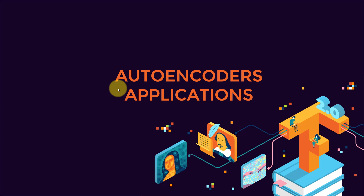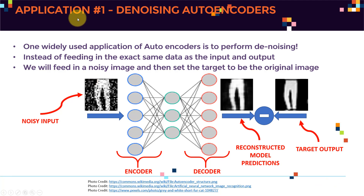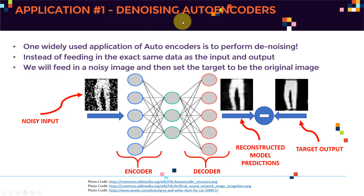Hello everyone and welcome to this new lecture. In this lecture we're going to cover the autoencoder applications. The first application for autoencoders is to perform image denoising, and these are basically a type of autoencoder known as denoising autoencoders.